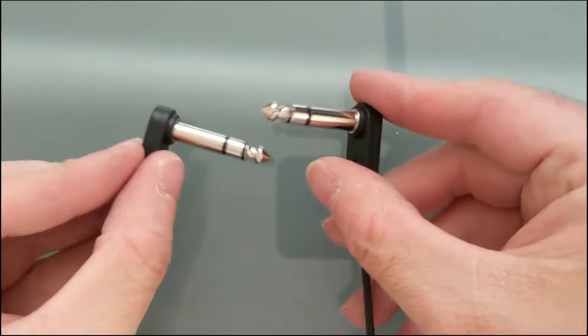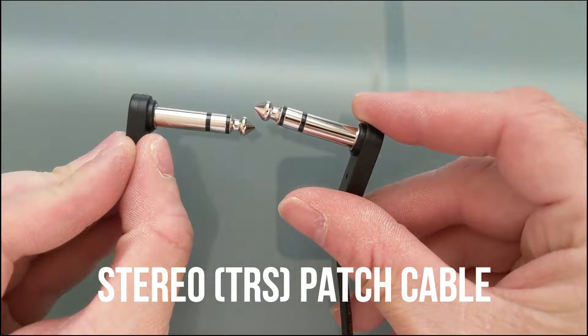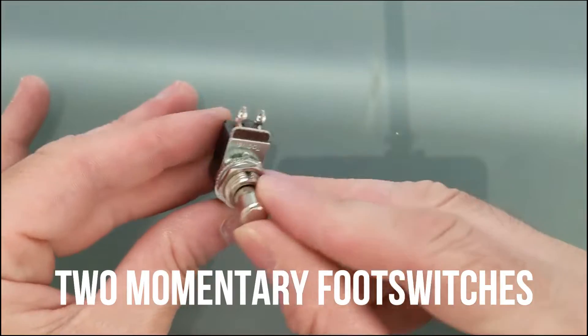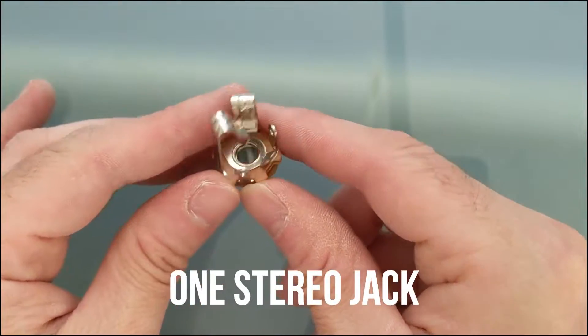Today we're going to build the cheapest possible two-button foot switch for our HX Stomp. You will need a TRS patch cable, two momentary foot switches, a stereo input jack, and an enclosure of some kind.